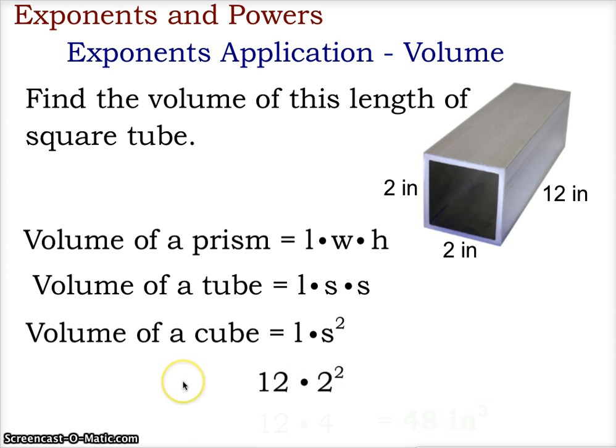Plugging in our values, we get 12 times 2 squared, and 12 times 2 squared is 12 times 4. So our volume of this tube is 48 inches cubed.